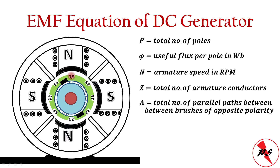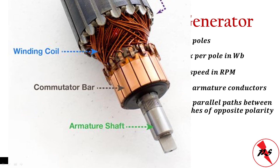A is the total number of parallel paths between brushes of opposite polarity. For example, if four armature conductors are connected between the positive and negative brushes in parallel, then A equals four. Since conductors in a single slot are in parallel, the EMF induced in them does not add up.